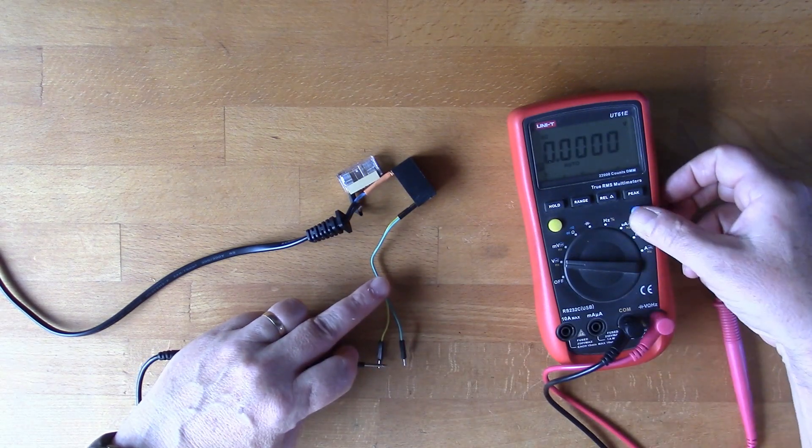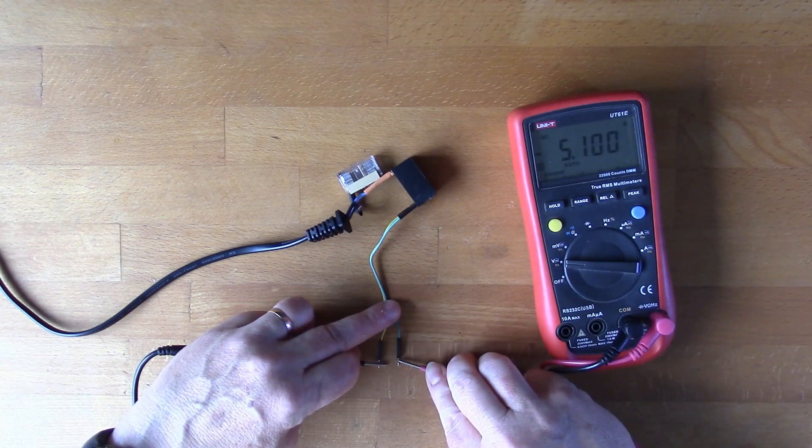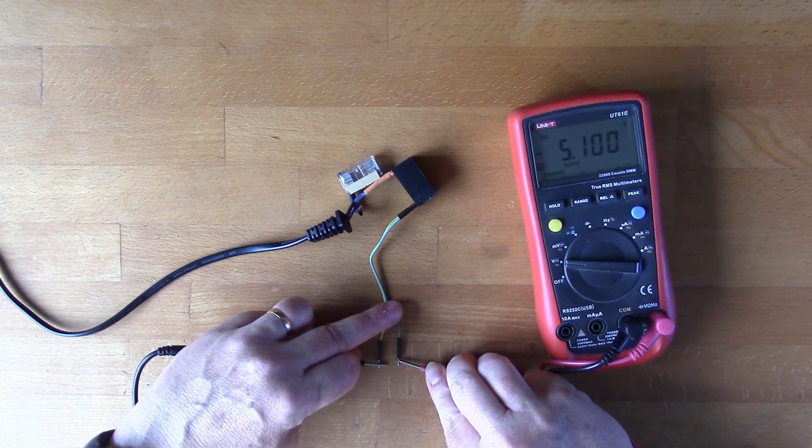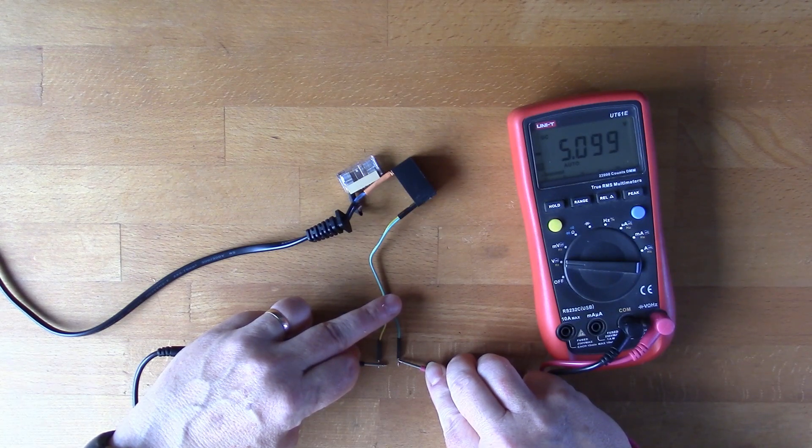Oh, I'm on AC for some reason. DC, there we go, 5 volts. Right, so we've got 5 volts coming out of there.